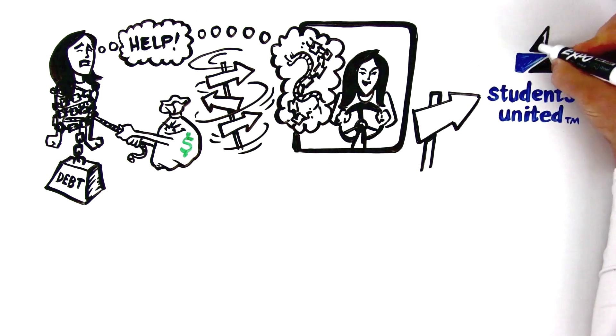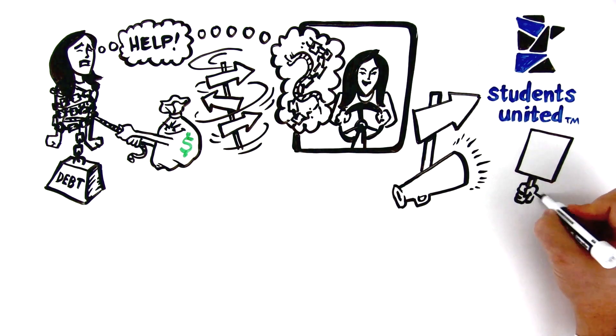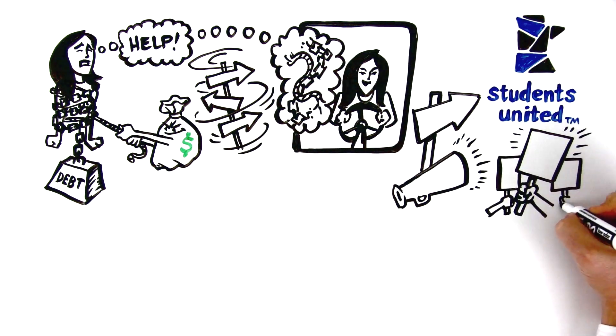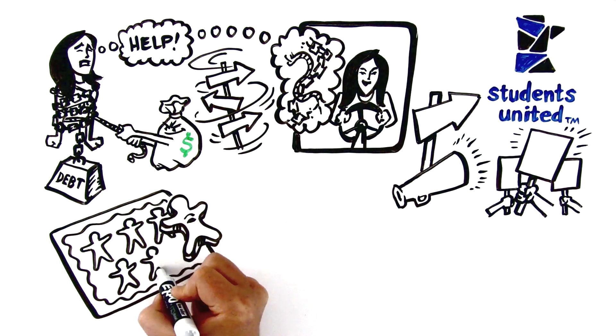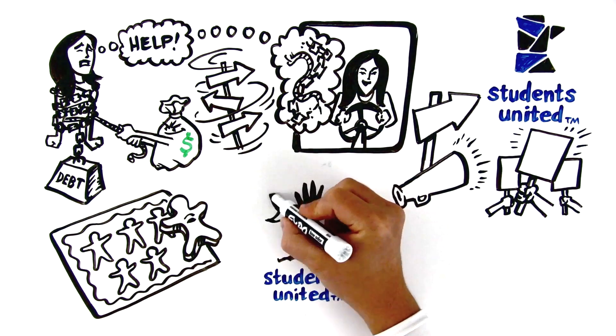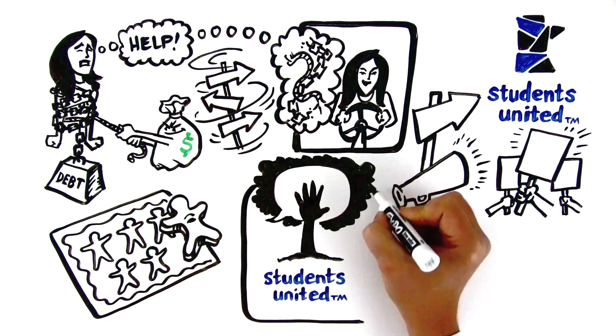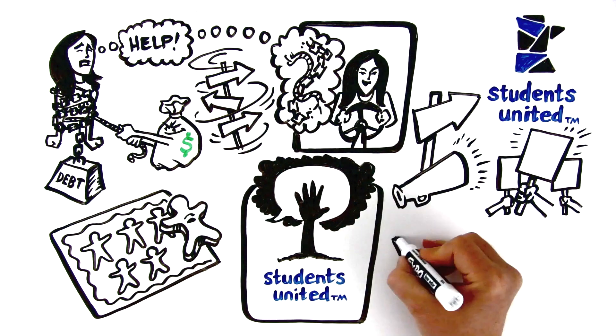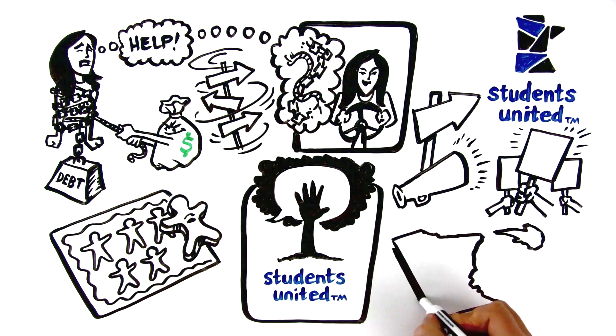Students United is an effective mechanism for voicing state university student concerns and advocating for state university student rights. Students United is not just another student organization. Rather, Students United is an independent 501c3 nonprofit that educates students about higher education issues that can affect their lives as students. The organization also provides opportunities for students to advocate on behalf of all Minnesota State University students.